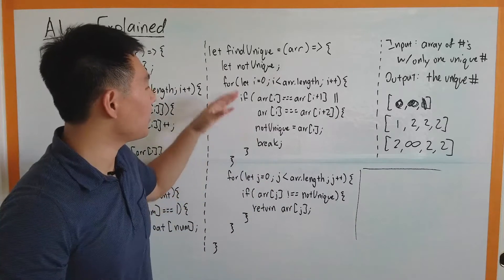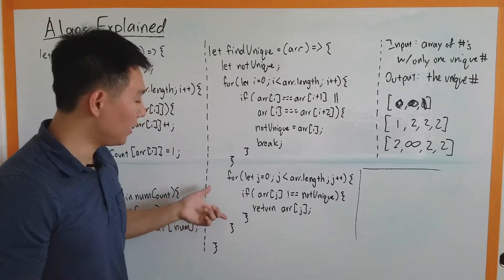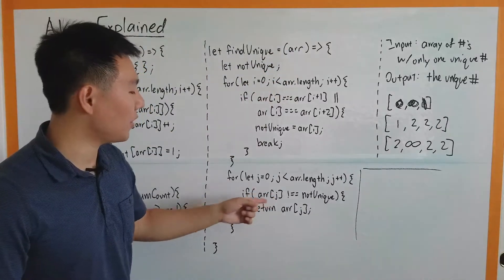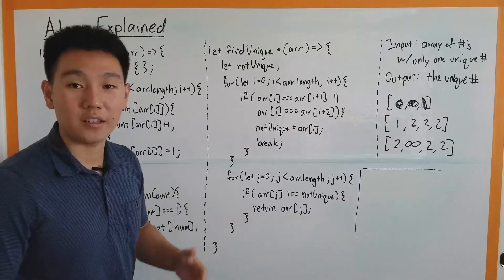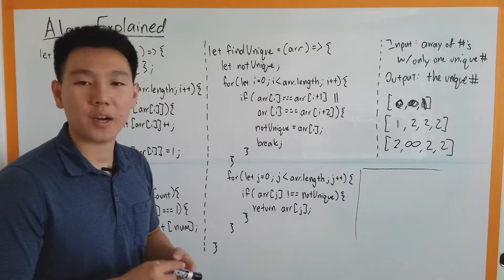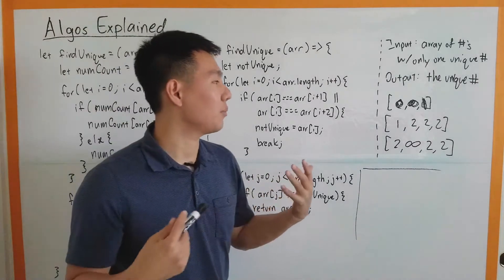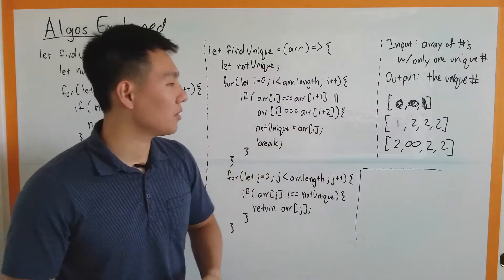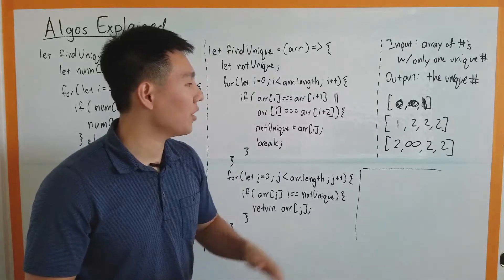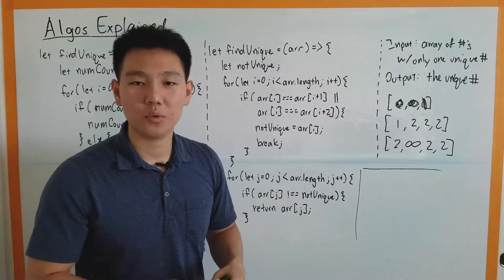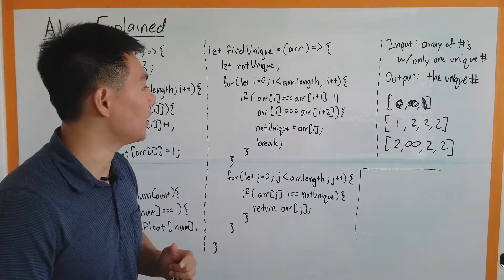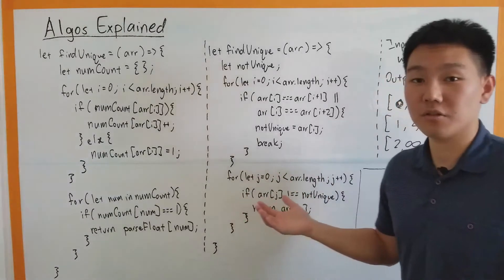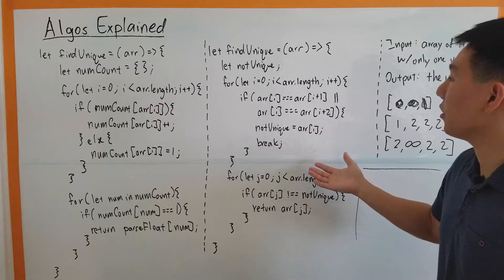Even if the unique number is last — say [0, 0, 1] — the first half of the OR condition will already work for identifying the not-unique number. That's why we don't try to find the unique one directly; it's easier to find the not-unique one. Then in a second pass through the array, we check: where is that number that's not the not-unique number? Once we find it, that's our unique number. We only have two numbers in the array — we're not looking for multiple numbers with multiple repetitions. There is one unique and one duplicated, nothing else.